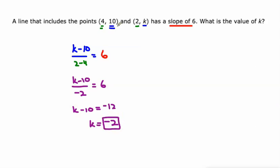And we get that K is negative 2. So if K is negative 2, this point would be 2 negative 2, and the line that runs through these two points would have a slope of 6. Let's do it again.